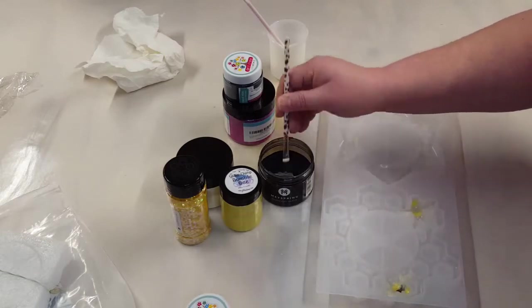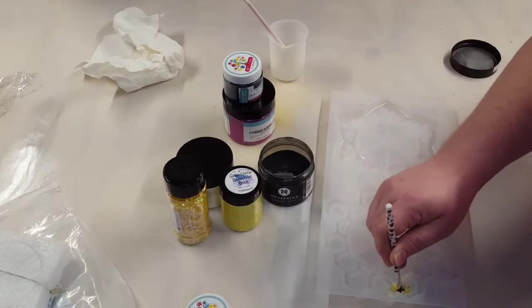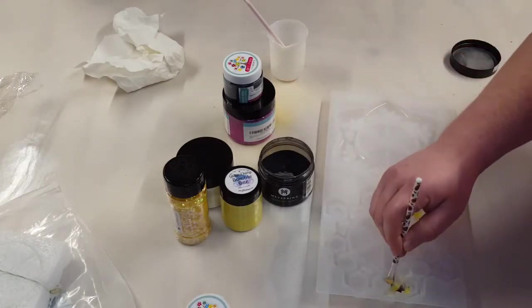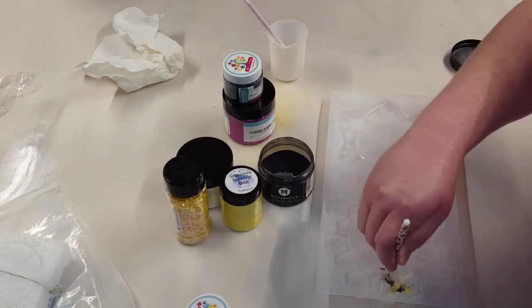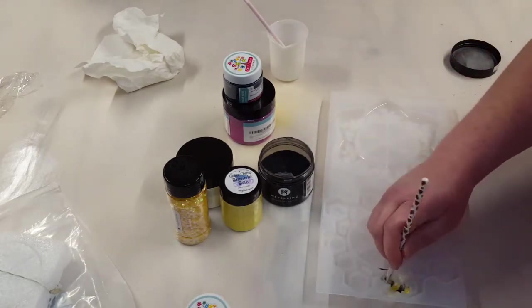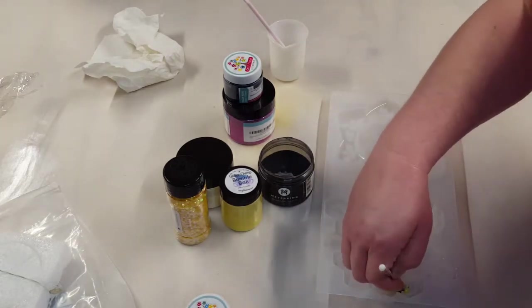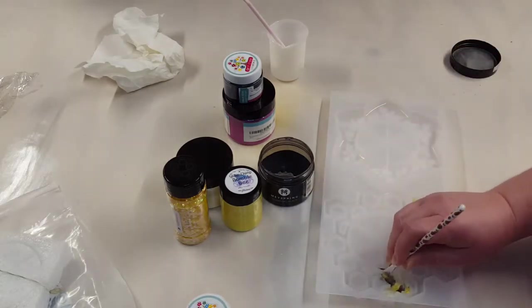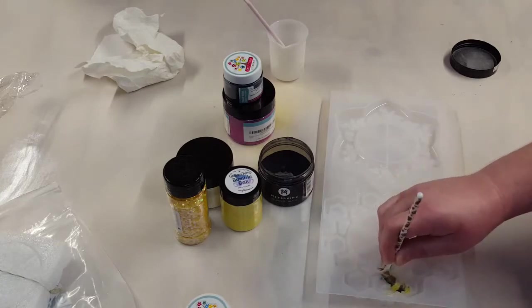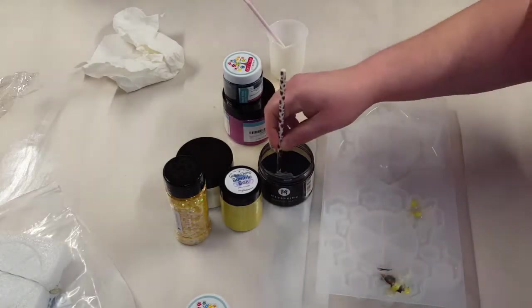This mold is a Lutz resin mold that I also got off of Amazon. Now this black is a charcoal black, I'm coming in here and finishing these bees. You can see that painting your micas into your mold can kind of get messy.